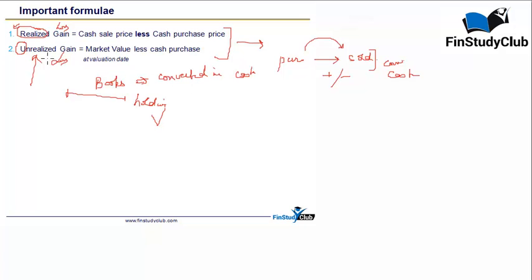So the formula of the two is fairly simple. It says the realized gain is equal to the cash sale price as reduced by the cash purchase price. As in, you know, $100 was the purchase price and $120 is the sale price, so in effect we have gained plus $20. Fairly simple.